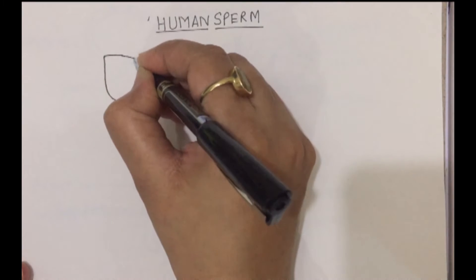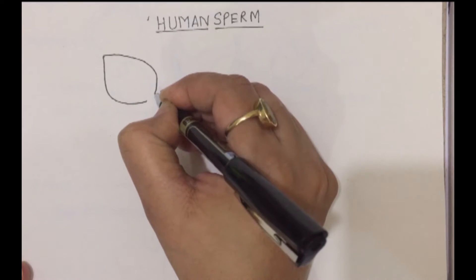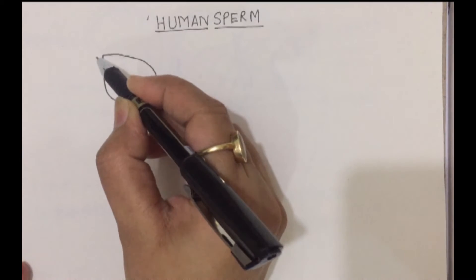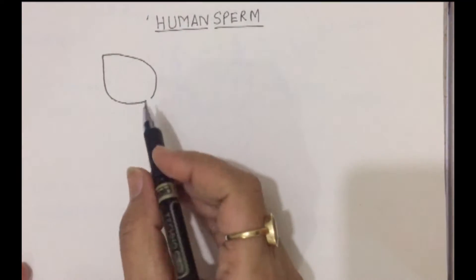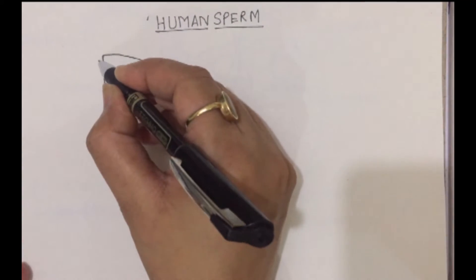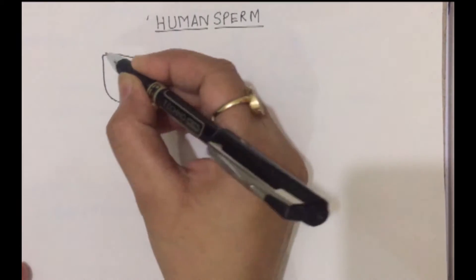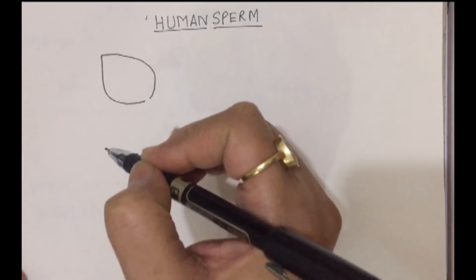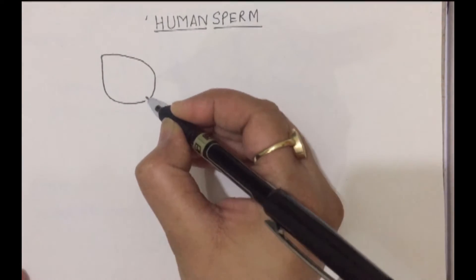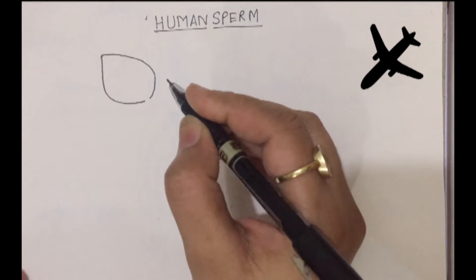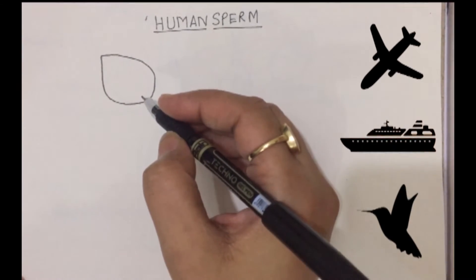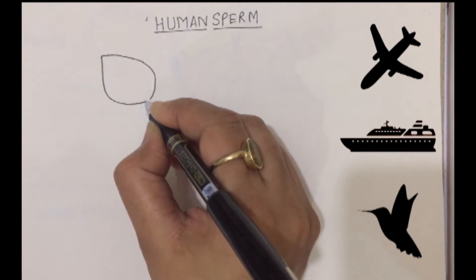The first part — the head — looks like this. You can see it has a streamlined surface. Why? Because the human sperm has to travel and penetrate into the ovum. A streamlined surface helps the sperm make its way through the vaginal passage and penetrate the ovum. You must have seen aeroplanes, boats — they all have a streamlined front. Even birds have beaks which are streamlined, and it is for the same reason.